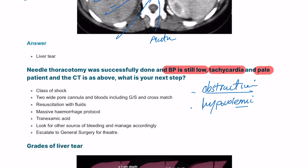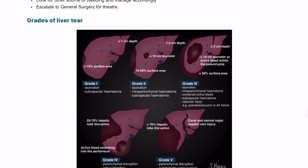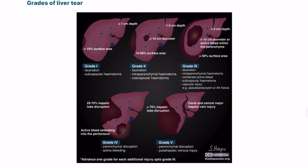The next step is to activate the massive hemorrhage protocol and immediately resuscitate this patient. Secure two wide-bore cannulas, take all needed bloods including group and screen, give tranexamic acid and fluids while awaiting blood products, and refer to the general surgery team for taking this patient to theater.